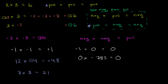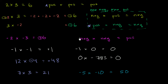Let's do one more. If I were to say negative 5 times negative 10 — well, once again, negative times a negative: the negatives cancel out and you're just left with a positive product. So it's going to be 5 times 10, which is 50. The negatives cancel out, your product is going to be positive.